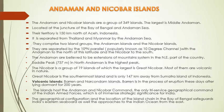Andaman aur Nicobar islands ke andar do pramukh dweep samuho paaye jaate hain — jo jaane jaate hain Andaman island ke naam se aur Nicobar island ke naam se. In dono ko separate karta hai 10 degree channel, yani ki 10 degree utri akshansh. Iske uttar mein hai Andaman dweep samuho, aur iske dakshin mein hai Nicobar dweep samuho. Andaman islands ko Himalaya ka ek extension maana jaata hai. Iski highest peak hai Saddle Peak, jo 737 meters unchi hai.